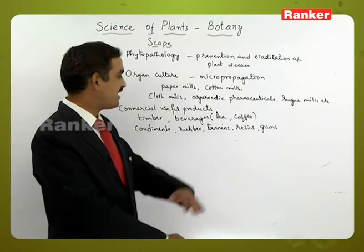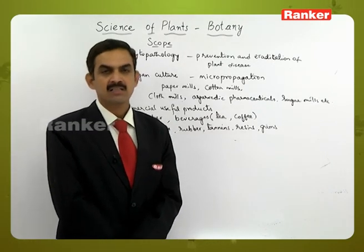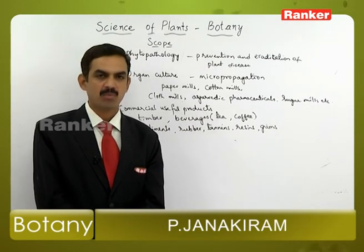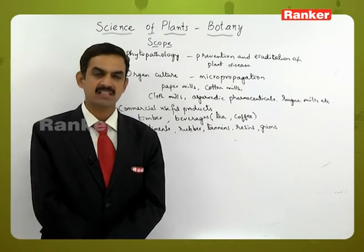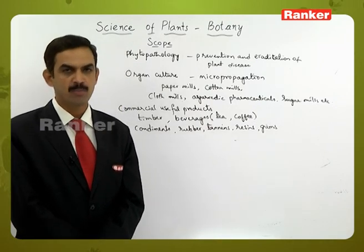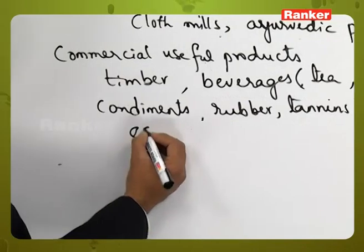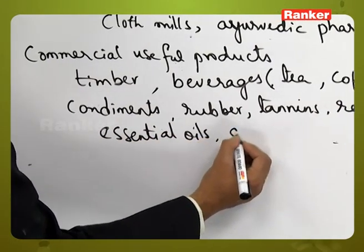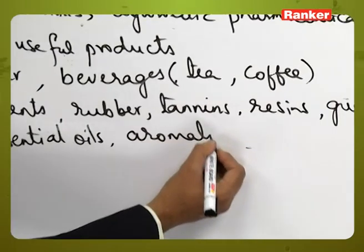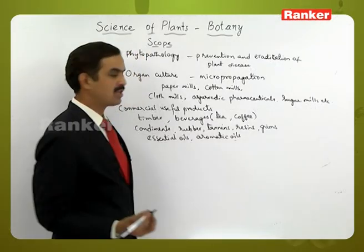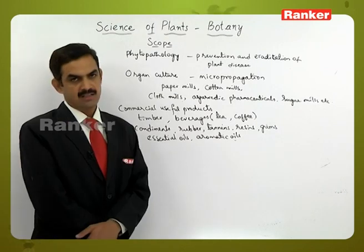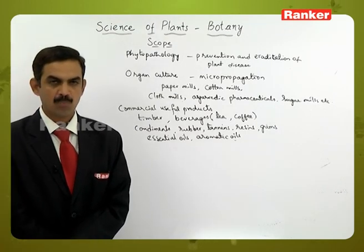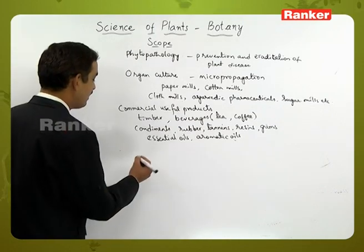Rubber, tannins, resins, and gums are secondary metabolites produced by plants. These secondary metabolites are not required by the plants themselves but are useful for humankind. Essential oils and aromatic oils are also produced by plants for human use. Since ancient times, human beings have depended on plants for medicinal purposes.